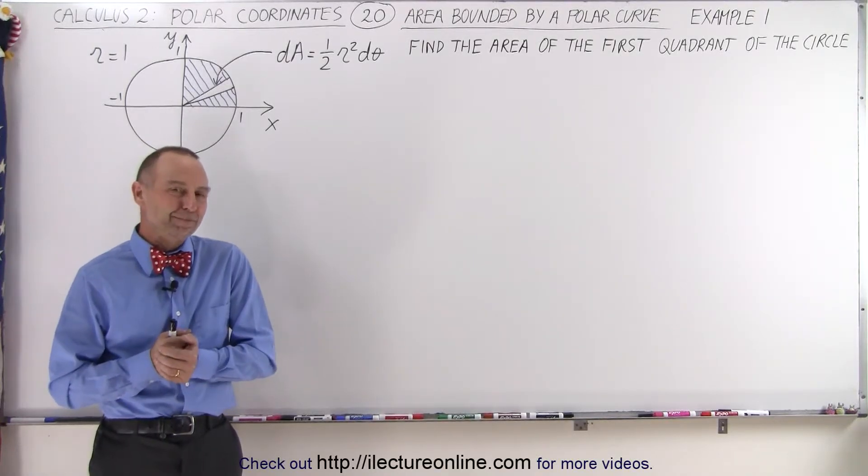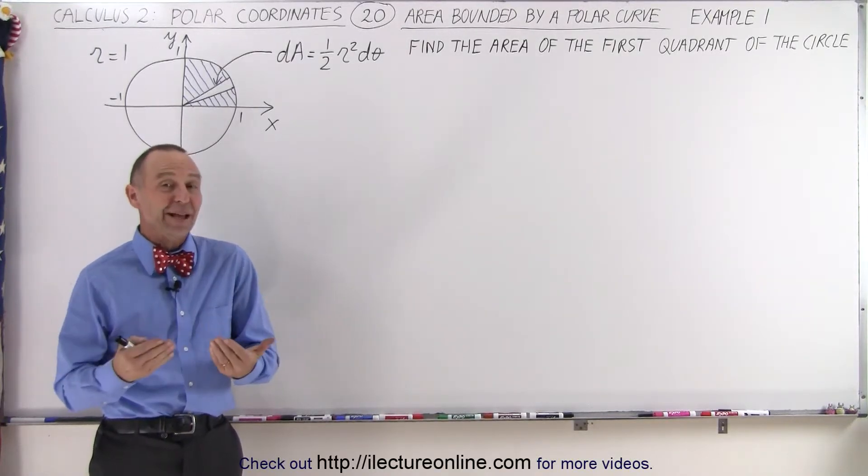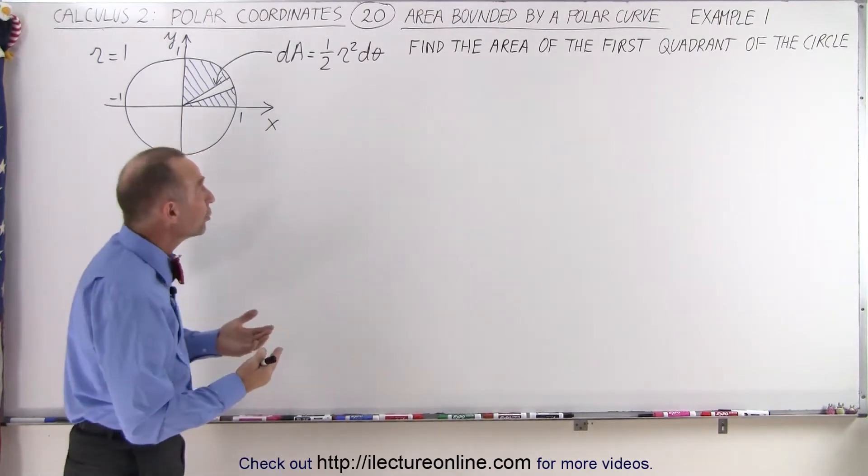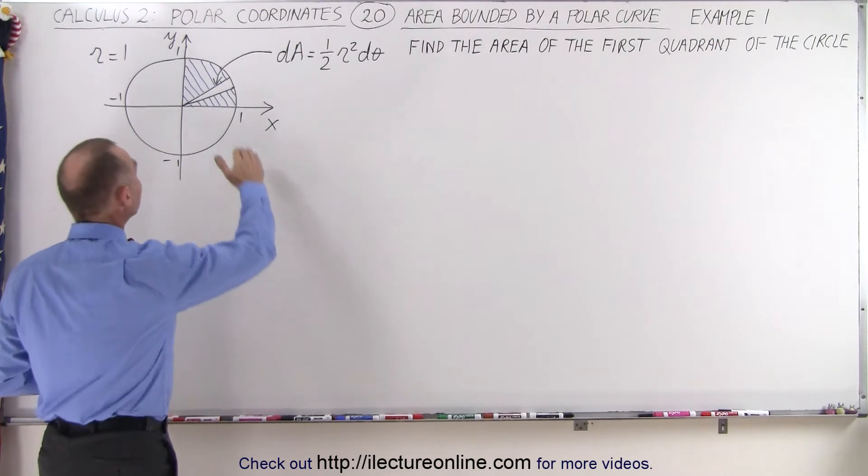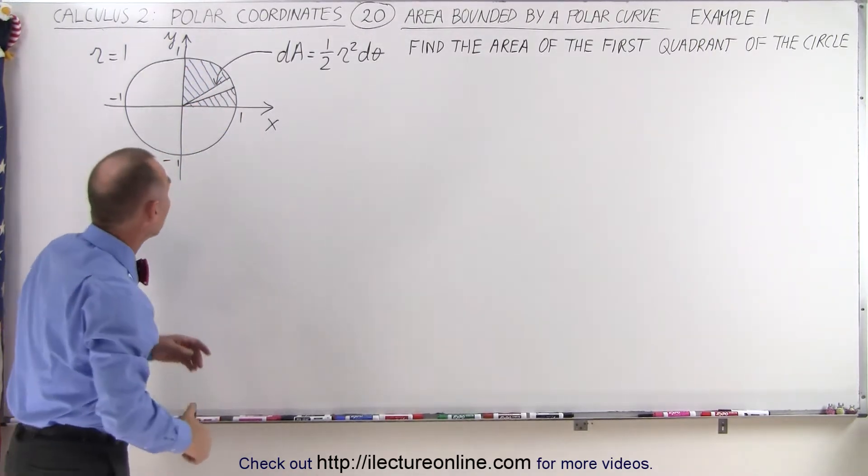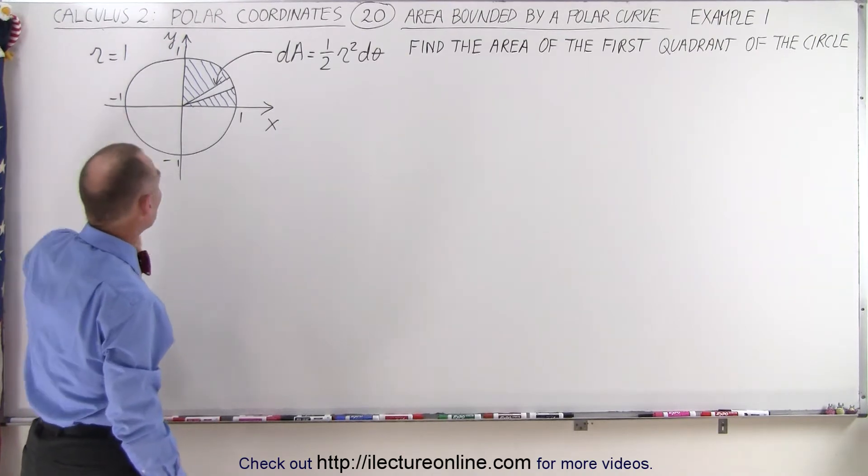Welcome to I-Lecture Online. Nothing like starting with an easy example to help us understand this concept. What we're trying to do here is find the area bounded by a polar curve. In this case, the polar curve is a circle defined by the equation r = 1.